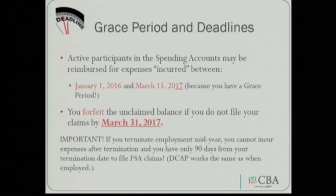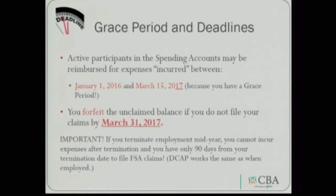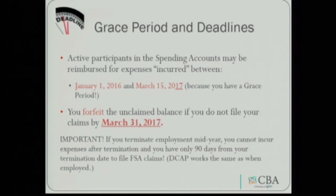Active participants in the spending accounts may be reimbursed for expenses incurred between January 1, 2016 and March 15, 2017. This is because your plan has what is called a grace period, which gives you the ability to continue to spend your prior year funds for a full two and a half months following the end of each plan year. You will also have 15 more days to submit your claims. The final filing date is March 31 each year — if you don't submit claims, your money will be forfeited on March 31 of the following year, so be sure to get your claims in early.